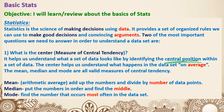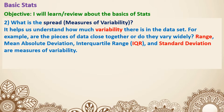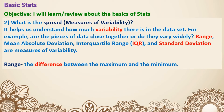The second question is called the spread — measures of variability. It helps us understand how much variability there is in the dataset. For example, are the pieces of data close together or do they vary widely? Range, mean absolute deviation, interquartile range (IQR), and standard deviation are all measures of variability. We'll learn more about a few of these later in the unit. For now, range is the difference between the maximum and the minimum — you just take the biggest number minus the smallest number in the dataset.